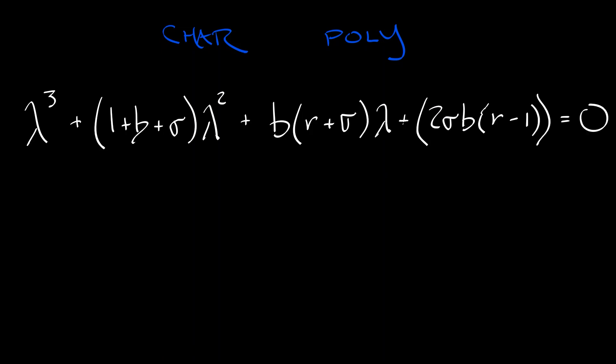And we're back. I hope you had fun doing that. What's the characteristic polynomial? I hope that you got what I got, which is lambda cubed plus quantity 1 plus b plus sigma times lambda squared plus b times quantity r plus sigma times lambda plus 2 sigma b times quantity r minus 1. Set all of that equal to 0. That's it.